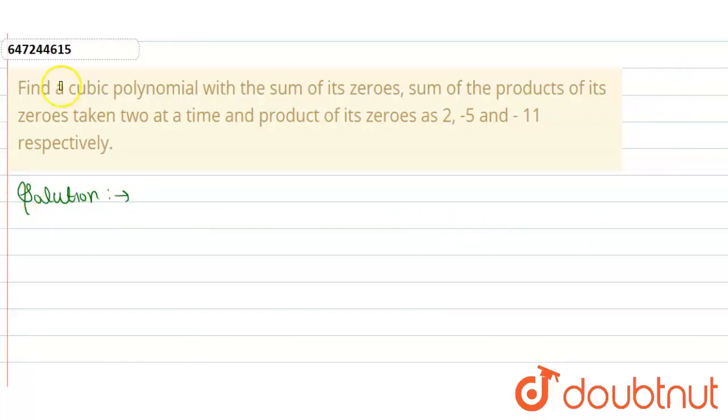Hello everyone, the given problem is to find a cubic polynomial given the sum of zeros, sum and product of the zeros taken two at a time, and product of the zeros. These are two, minus five, and minus eleven.